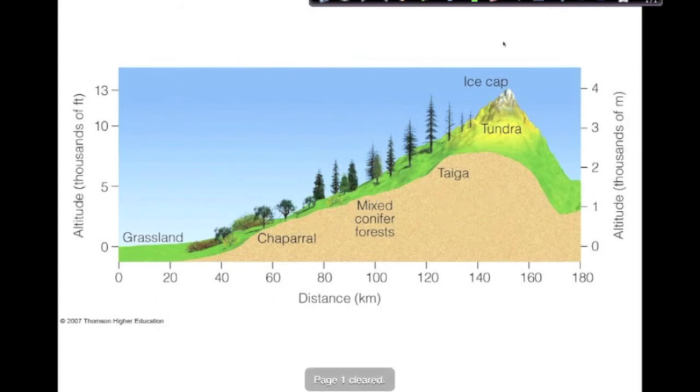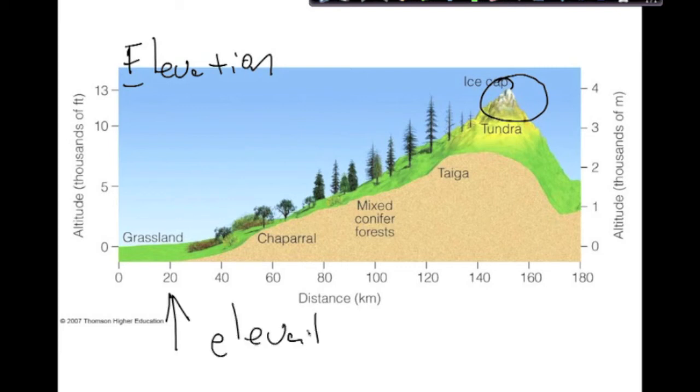The next factor that affects climate is elevation. If two cities have the same latitude, and one of them has a higher elevation than the other, the city with the higher elevation is going to be colder. As you see here, the ice cap has the higher elevation. So, the higher you get, the higher the elevation, it's going to be the lower the temperature. Pretty simple.